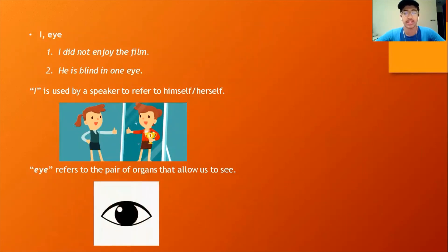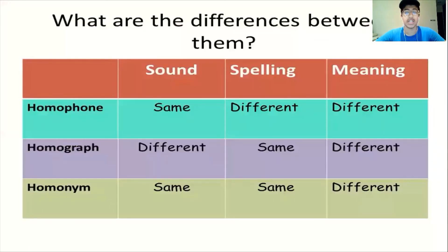Here are the differences between homophones, homographs, and homonyms. Homophones sound the same but are spelled differently and mean different things. Homographs sound different but are spelled the same and mean different things. Homonyms sound the same and are spelled the same but mean different things.